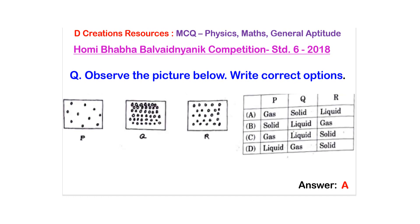For example if you consider this box P, you can note that there are least number of molecules here as compared to Q and R. So definitely this belongs to gas.